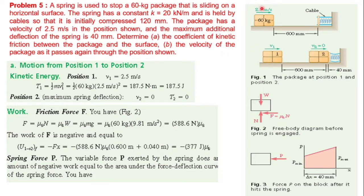In the first position, the initial velocity is 2.5 m per second. The mass is 60 kg. The spring constant is 20 kN per meter. The initial compression is 120 mm. The maximum additional deflection added is 40 mm.